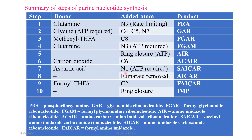Step 7: aspartate donates N1. Step 8: fumarate is removed. Step 9: C2 is formed, with the carbon donor being 10-formyl tetrahydrofolate. Step 10: final ring closure. The first purine nucleotide formed is IMP — inosine monophosphate.